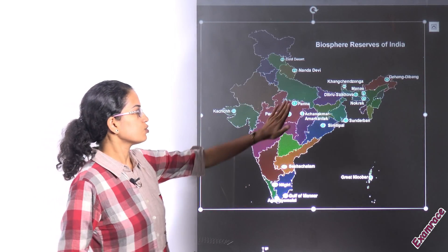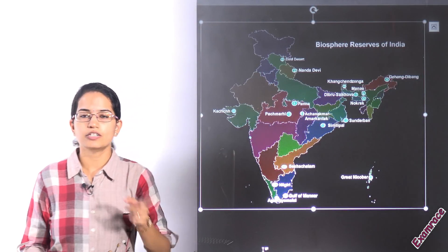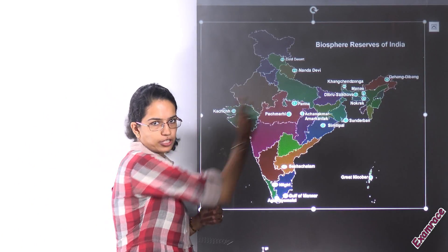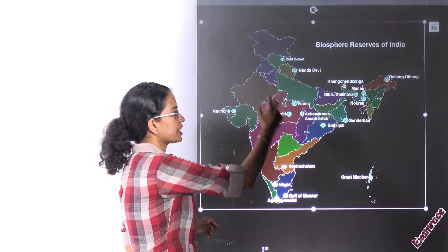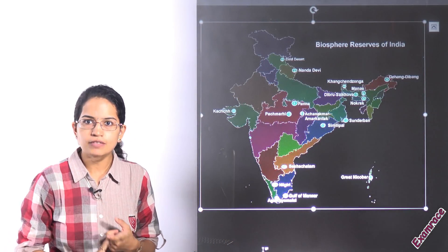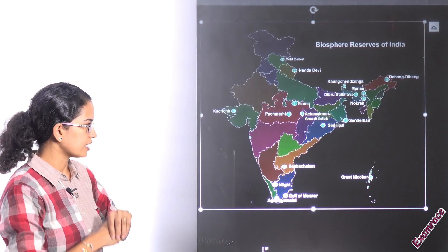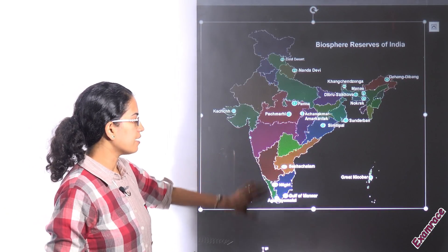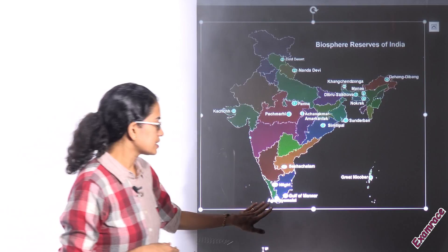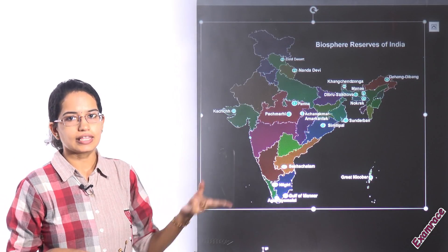There are three biosphere reserves in Madhya Pradesh: Panna, Pachmarhi, and Amarkantak. Panna was the last one declared — the 18th biosphere reserve. Before that, Seshachalam was declared as the 17th biosphere reserve, which lies in the state of Andhra Pradesh.